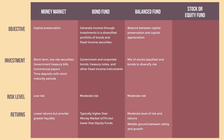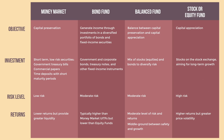Stock or Equity Fund UITF — its objective is primarily to seek capital appreciation by investing in a portfolio of stocks or equities. These funds predominantly invest in listed stocks on the stock exchange, aiming for long-term growth. They can be more volatile than other UITF types due to stock market fluctuations. Equity Fund UITFs are considered high-risk investments because they are directly influenced by the stock market's volatility, but they have the potential for higher returns over the long term.